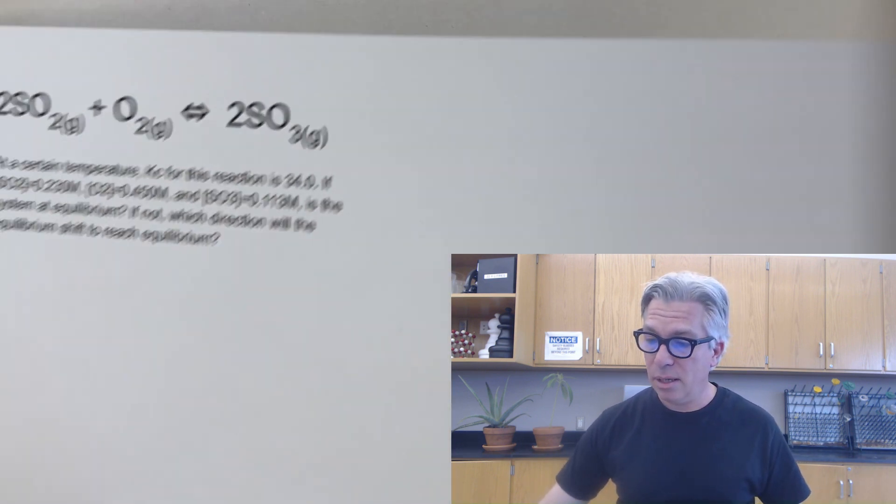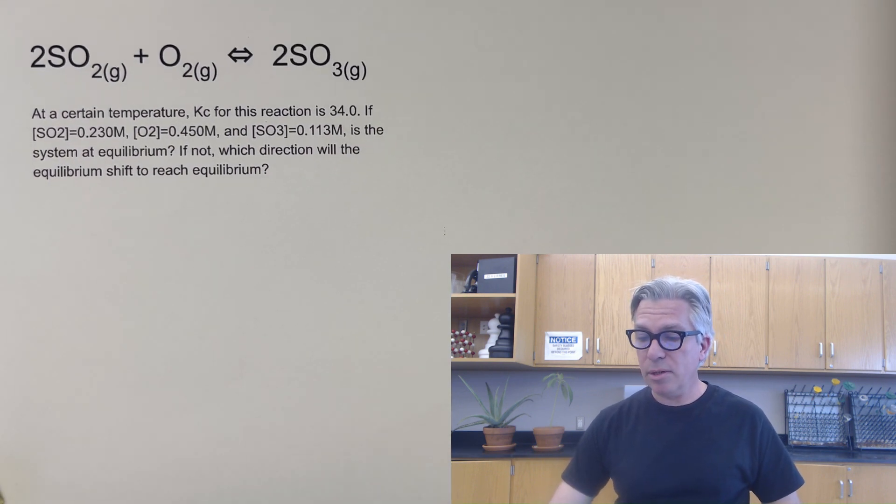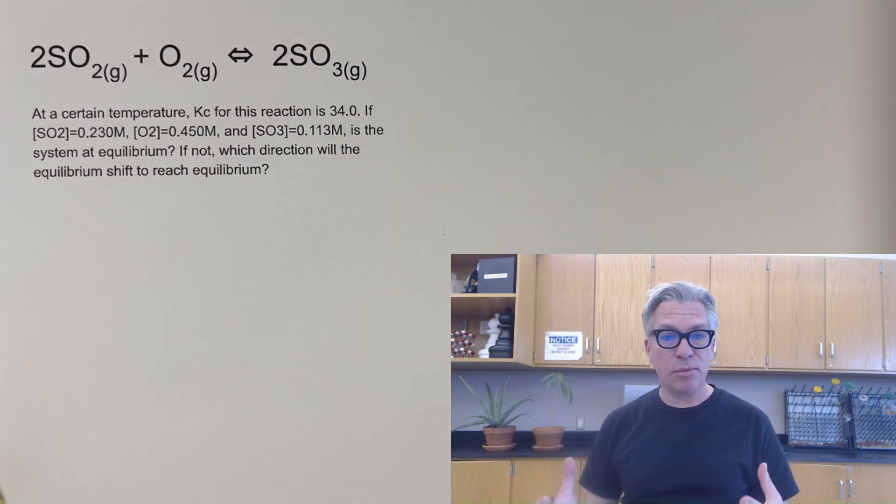So that's an example of how we use the reaction quotient. And now we're going to have our pause the video moment for this episode. Take a moment. We have some current conditions for this reaction. Take a moment, find the reaction quotient, and see if you can predict which way the equilibrium will shift for this one.